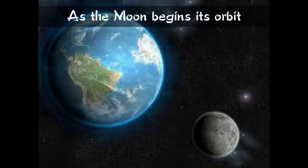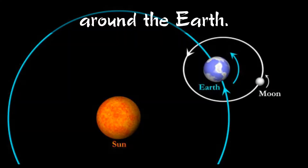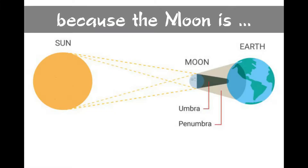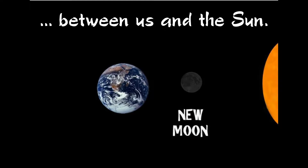As the Moon begins its orbit around the Earth, we don't see the Moon, because the Moon is between us and the Sun.